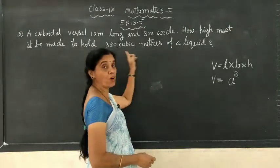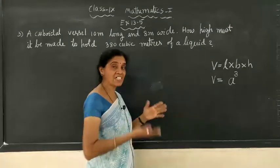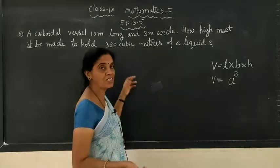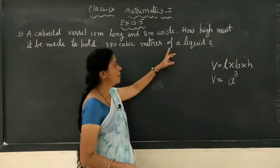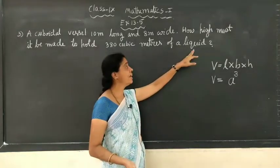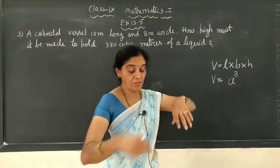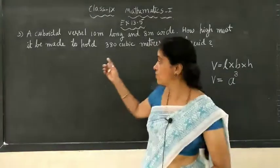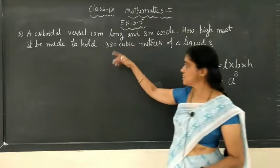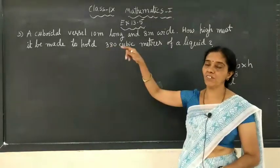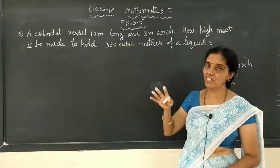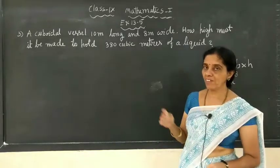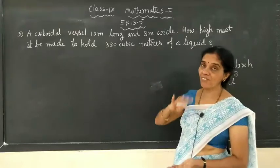That is nothing but its volume. How much the capacity of that container is — nothing but the volume of that particular vessel — to hold the liquid. If you put liquid in that vessel, how much liquid you can have? That is the capacity. It is nothing but the volume of the cuboid — how much volume it has, that much liquid it can hold.